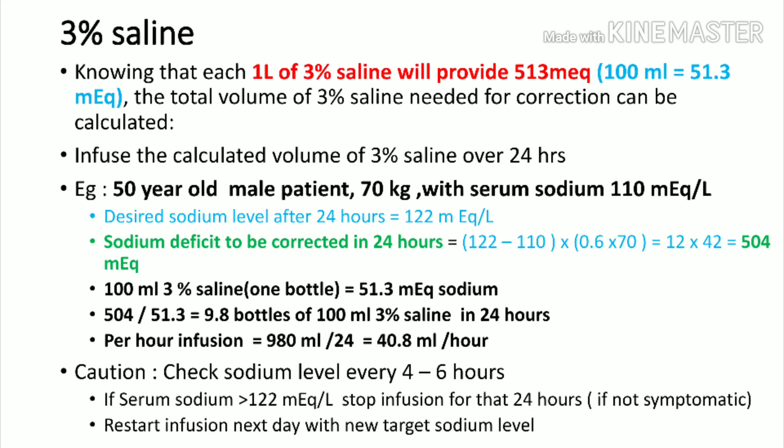Maximum sodium correction is 8 to 12 milliequivalents per day. If current sodium is 110 and the target is 122: sodium deficit = (122 − 110) × 0.6 × 70 = 12 × 42 = 504 milliequivalents. Since 100 ml of 3% saline contains 51.3 milliequivalents, this patient may require approximately 10 bottles over 24 hours. Chronic hyponatremia or elderly patients may only need 6–8 milliequivalents per day correction.